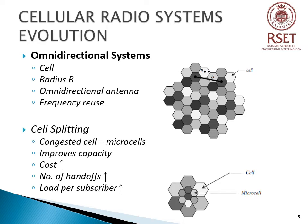Due to the omnidirectional pattern, only a small percentage of total energy reached the desired user; the remaining energy was radiated in undesired directions. As the number of users increases, interference increases and hence capacity decreases. An immediate solution to this problem was to divide the cell into smaller cells, referred to as cell splitting.